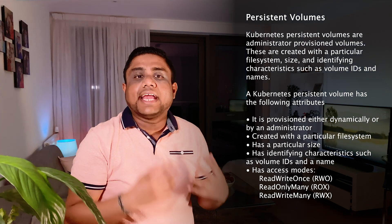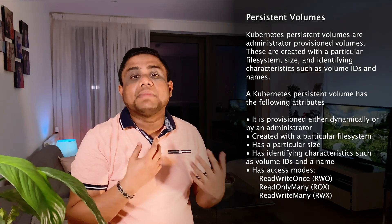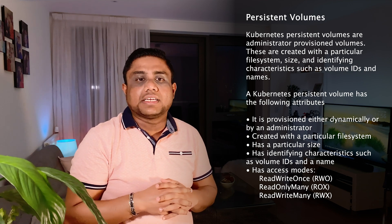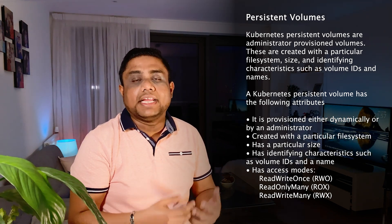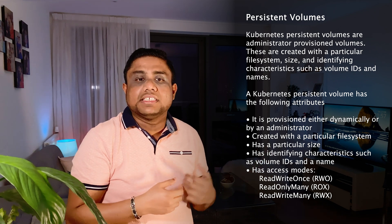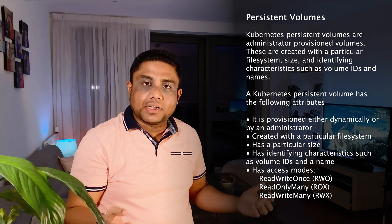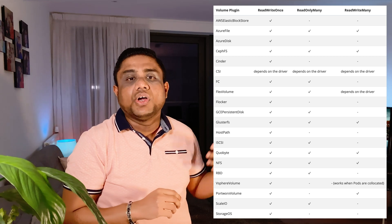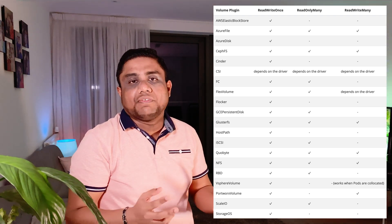Persistent volumes have access modes based on the supported storage provider. ReadWriteOnce (RWO) allows both read and write but the volume can only be mounted to one node in your Kubernetes cluster. ReadOnlyMany (ROX) can be used only for read-only access but it can be mounted to multiple nodes. ReadWriteMany (RWX) provides both read and write access and the volume can be mounted to multiple nodes. You need to check the volume provider documentation for supported access modes. For example, EBS volumes, Azure Disk, and hostPath support ReadWriteOnce only, while NFS volumes support all of these access modes.